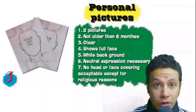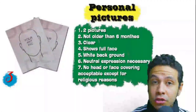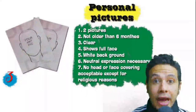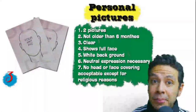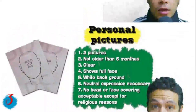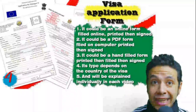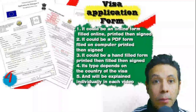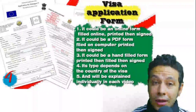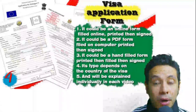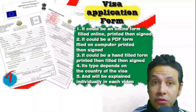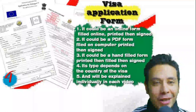For personal pictures, you will need at least two — sometimes one or three are required. They must be new, not older than six months, clear, showing your full face, preferably with a white background, with normal and neutral expressions. No head or face covering is acceptable except for religious reasons. For the visa application form, generally only one copy is needed, though sometimes two or three are required. You should print it and fill it manually, though many countries now offer online forms.